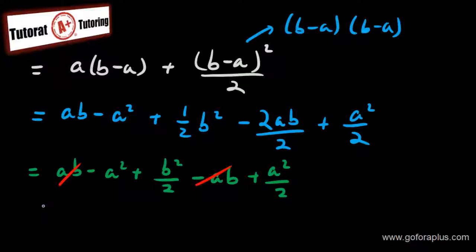So what I have here finally is going to be b square over 2 minus a square over 2. And this is basically my answer. If you rewrite it like this, b square minus a square over 2, and this is how I prove this equation.